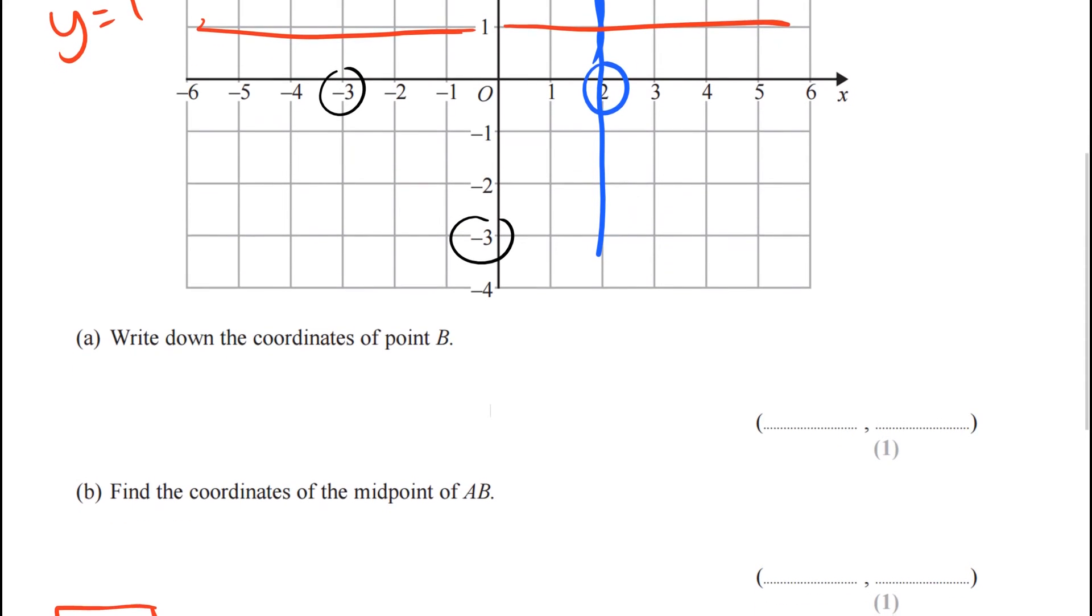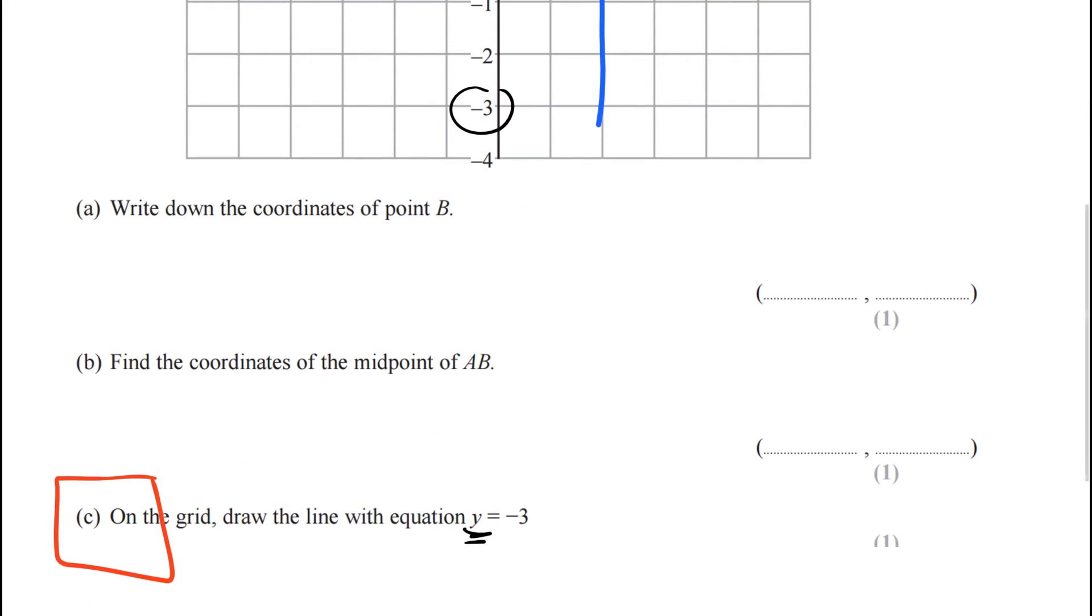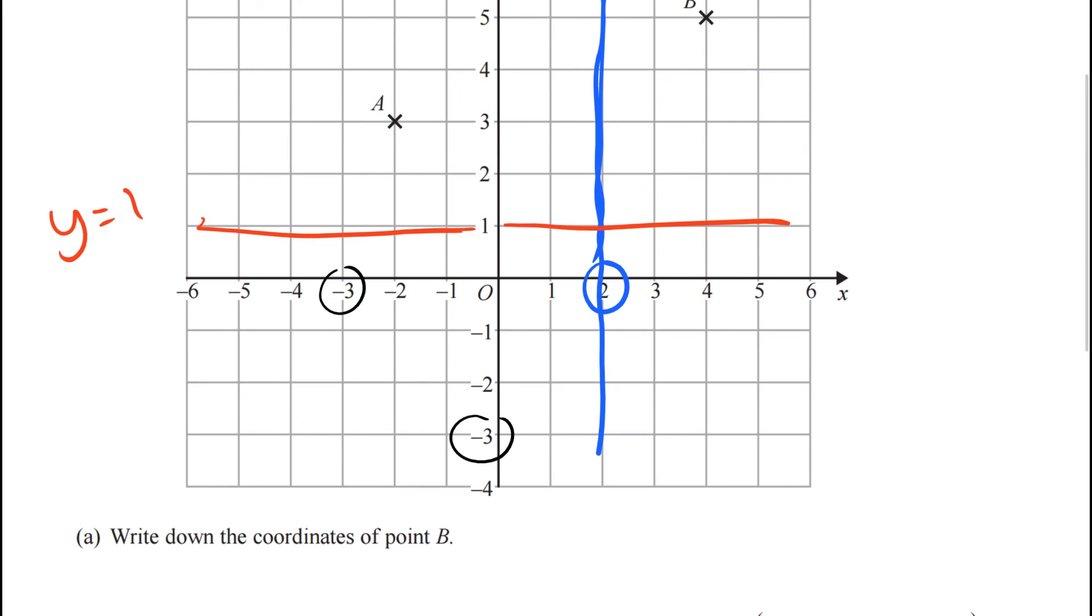Well, it said y equals minus 3. So we need to find the minus 3 that's on the y-axis, and the y-axis is the vertical axis. So here's the minus 3 on the y-axis, and we need a horizontal line that goes through that.